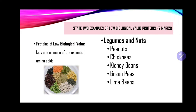The next part asks you to state two examples of low biological value proteins, worth two marks. It is important to note that low biological value proteins lack one or more of the essential amino acids. These proteins are generally of plant source — legumes and nuts. Examples include peanuts, chickpeas, kidney beans, green peas, and lima beans. Remember that soybean, though a plant source, is of high biological value, so it would not be listed here.